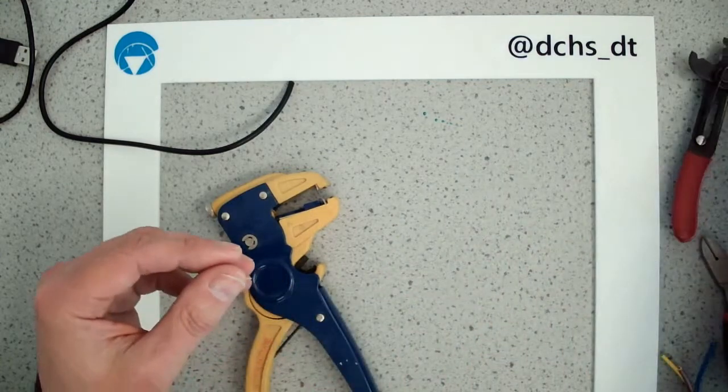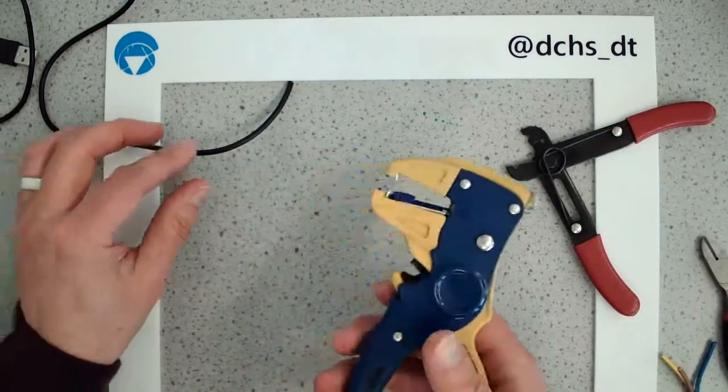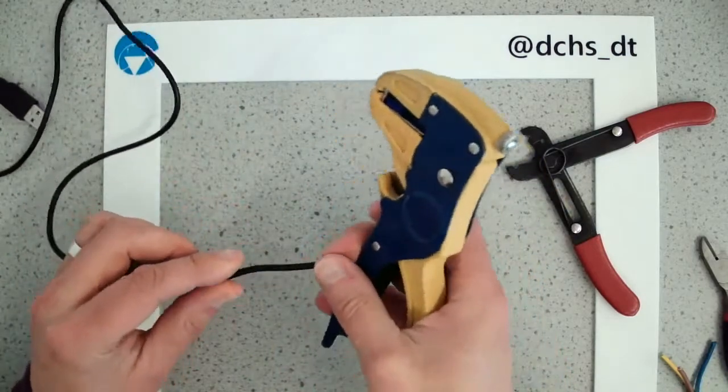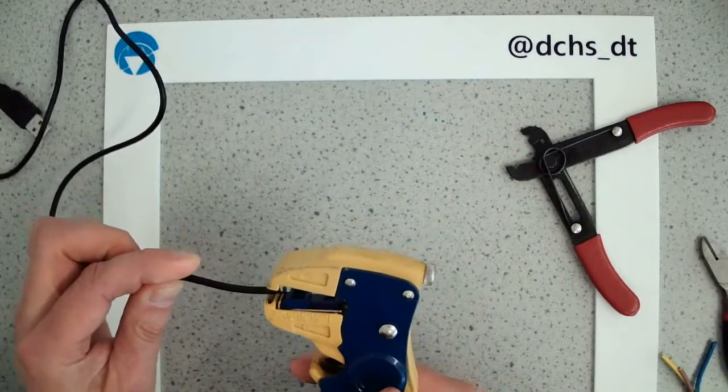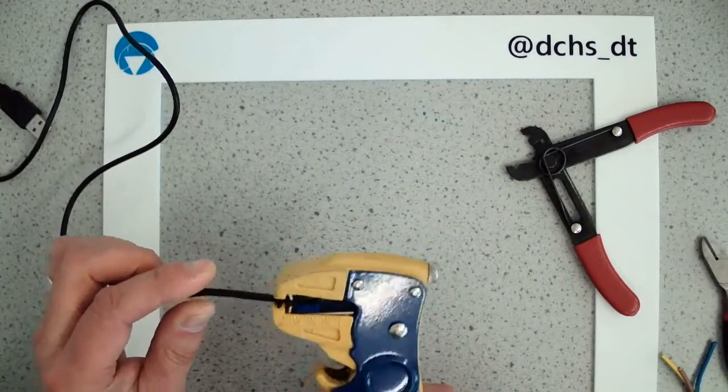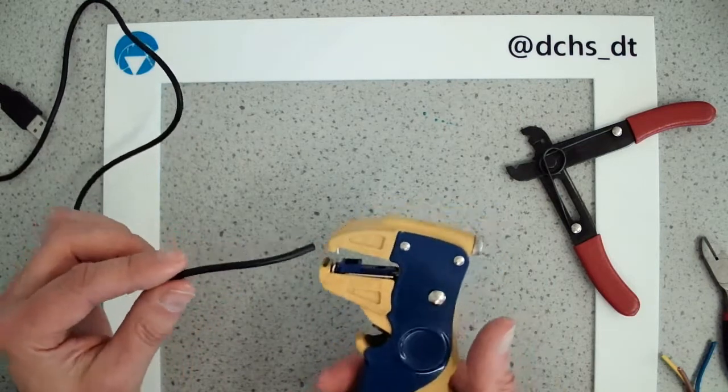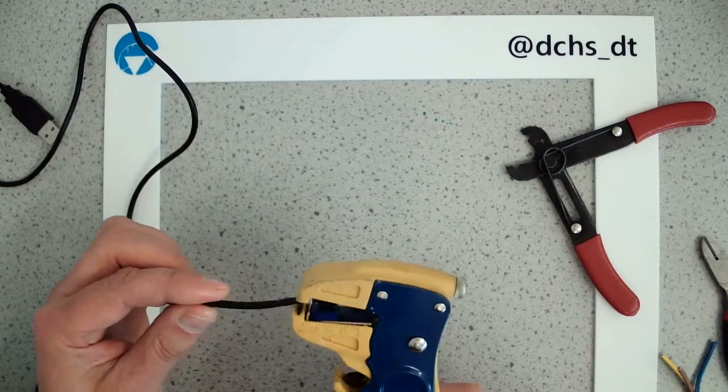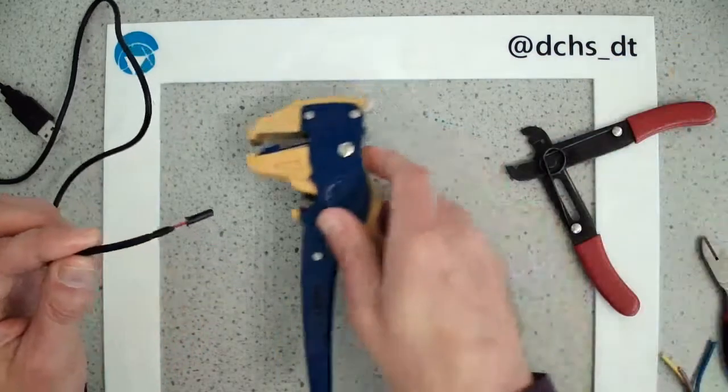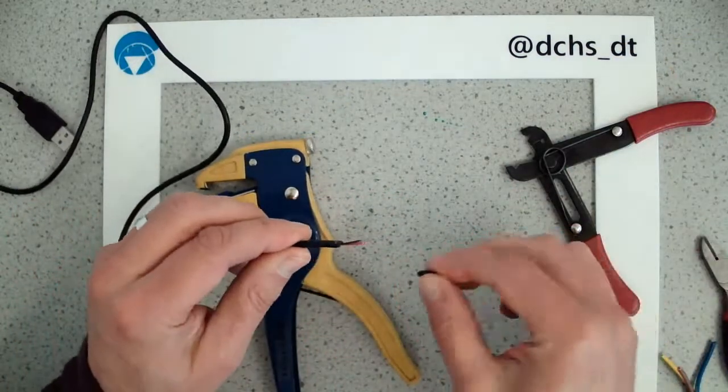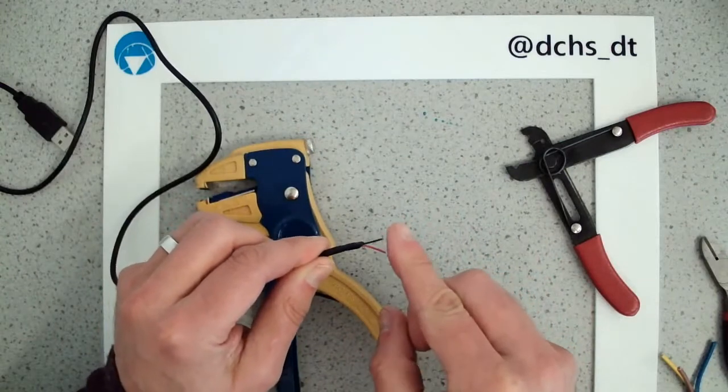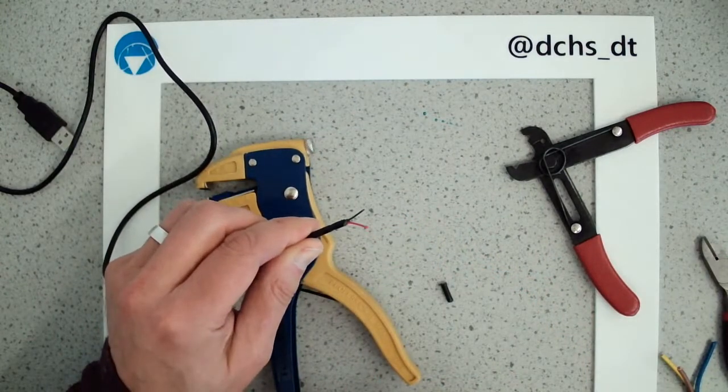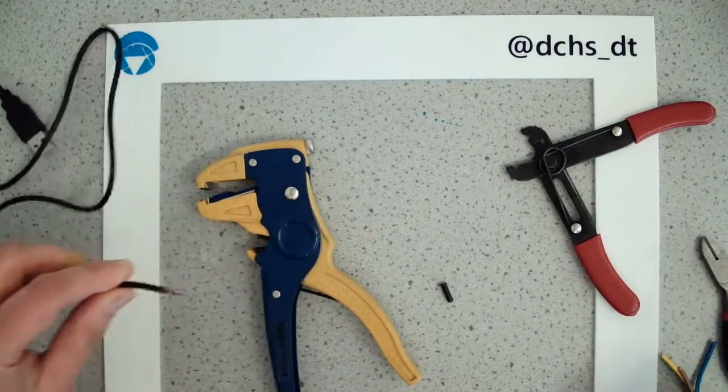So the heavy-duty one I'll demonstrate just on this USB lead. There are two strands also insulated inside this cable. What we do is we place the wire into the jaws and then we pull on the handle, and that should remove just the outer layer of insulation, exposing our two inner cores.